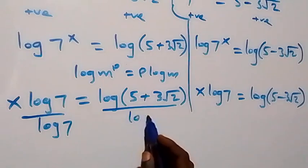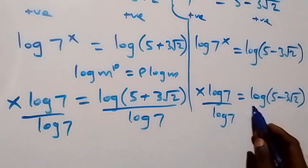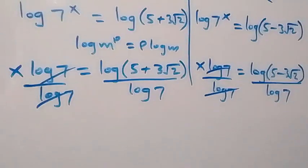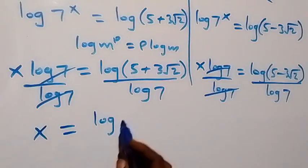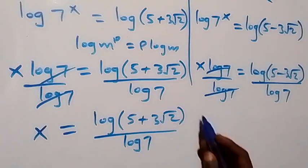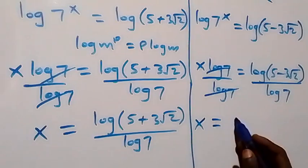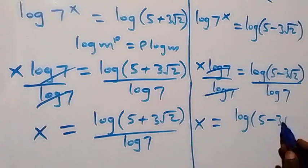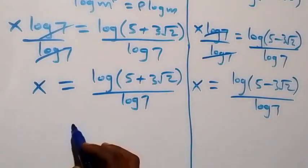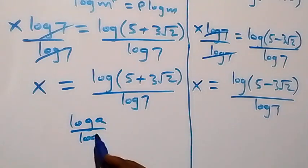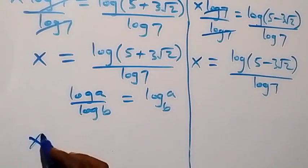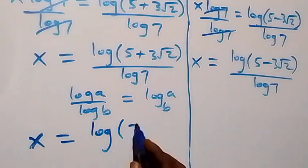Dividing by log 7 on both sides, log 7 cancels out, giving x equals to log bracket 5 plus 3 root 2 over log 7, and x equals to log bracket 5 minus 3 root 2 over log 7. Using the change of base rule — log a over log b equals log a to base b — we can write these as x equals log base 7 of bracket 5 plus 3 root 2, and x equals log base 7 of bracket 5 minus 3 root 2.